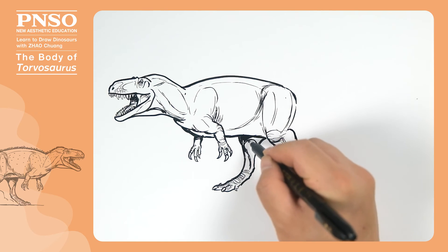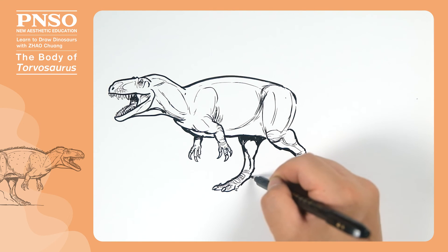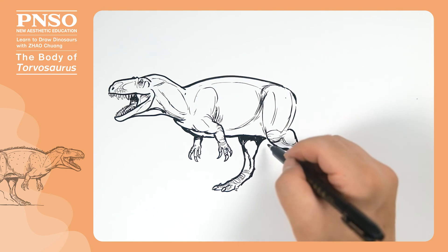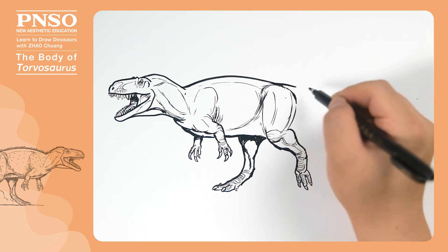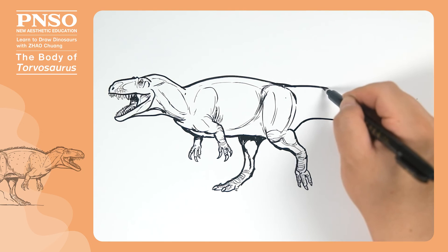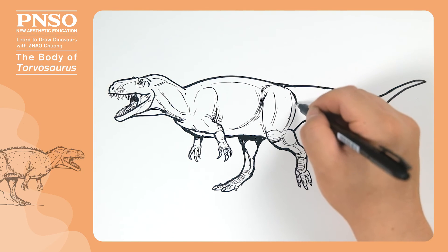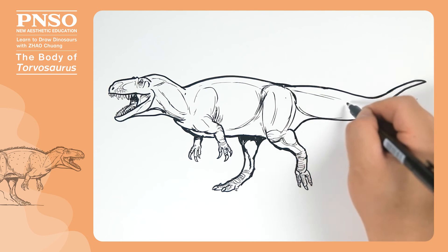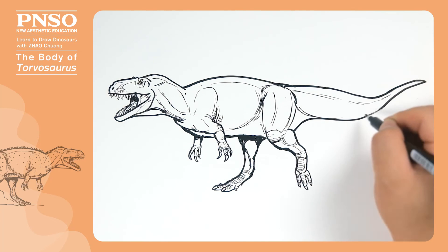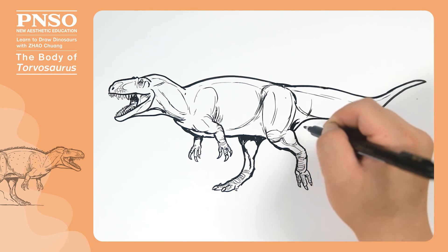We can shade this part of the leg, and draw the tail at the back. Between the legs and the tail, draw a layer of skin and some folds.